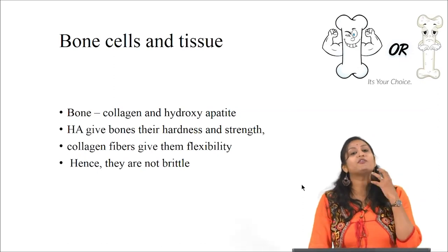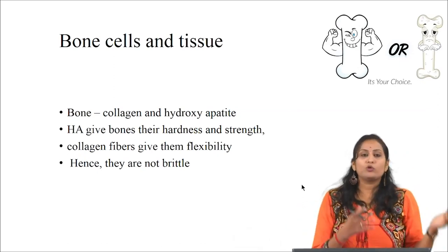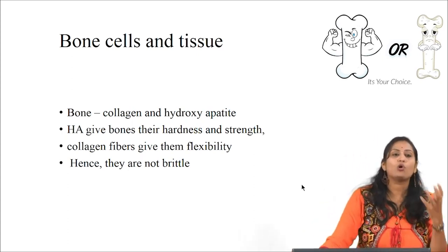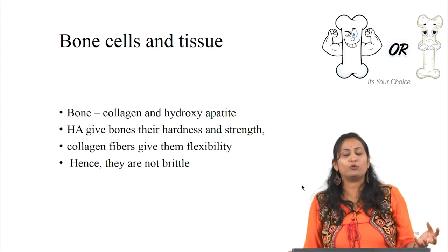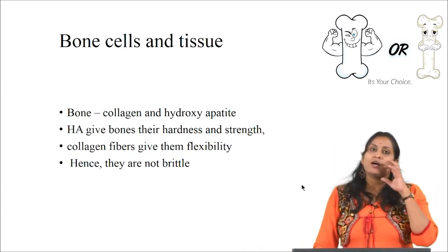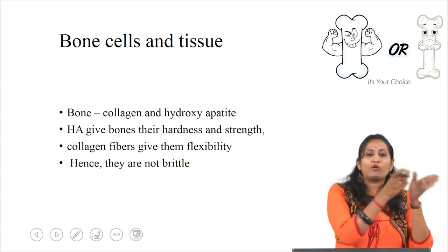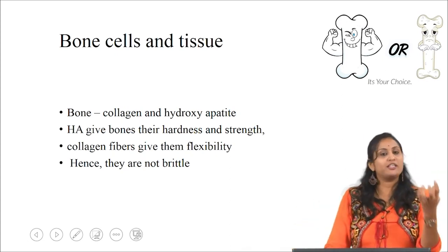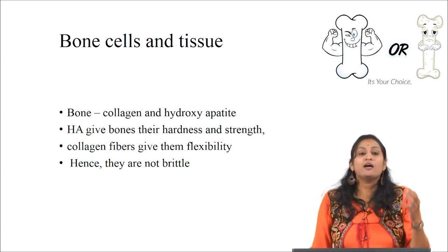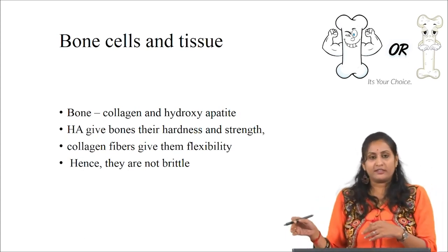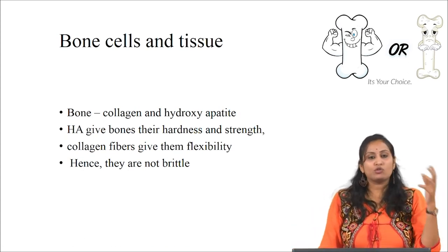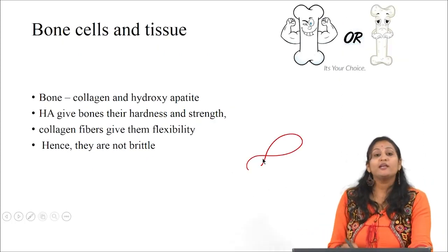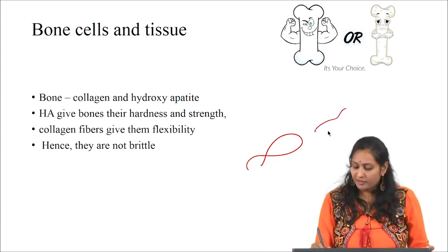Next we need to discuss bone cells and tissue, which play a major role in tissue engineering aspects. As explained in the introduction, bone is made up of collagen and hydroxyapatite. Hydroxyapatite gives bone its strength and hardness, whereas collagen gives it flexibility. If hydroxyapatite is absent, the bone will become more elastic. If collagen is absent, the bone will become brittle.